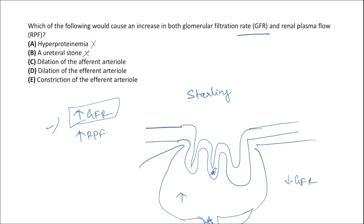Dilation of the afferent arteriole decreases resistance, leading to an increase in renal blood flow and also an increase in the rate of glomerular filtrate formation, so GFR would also increase. Let's check the other choices.